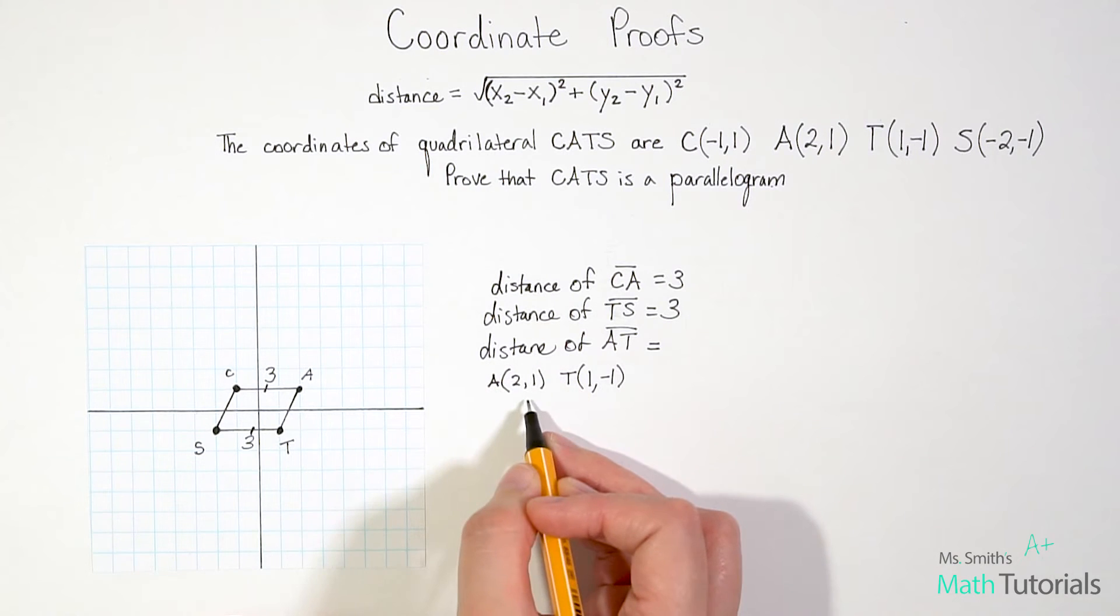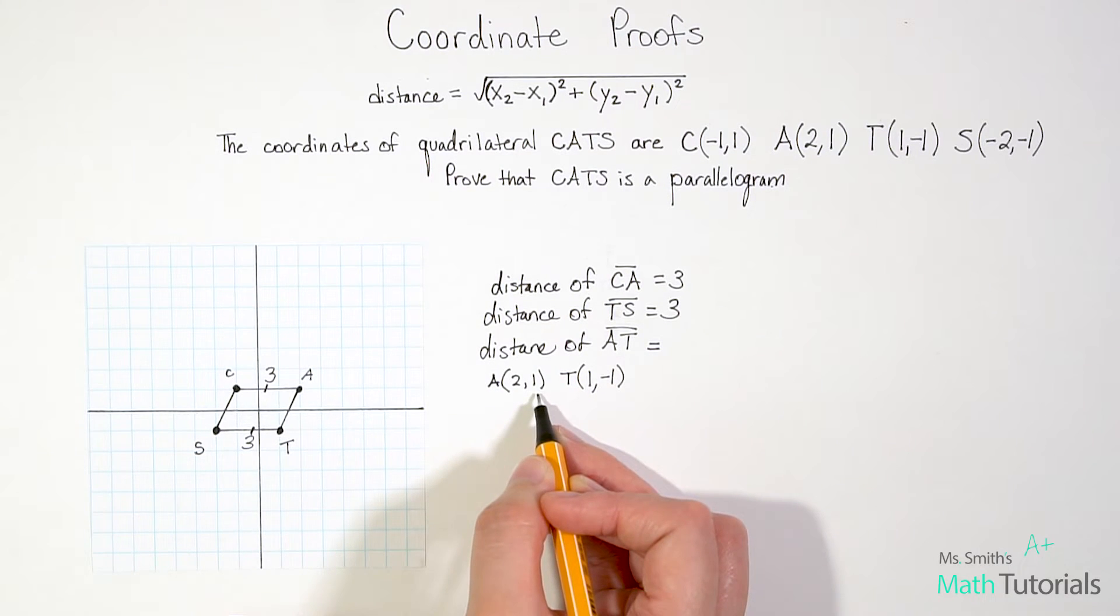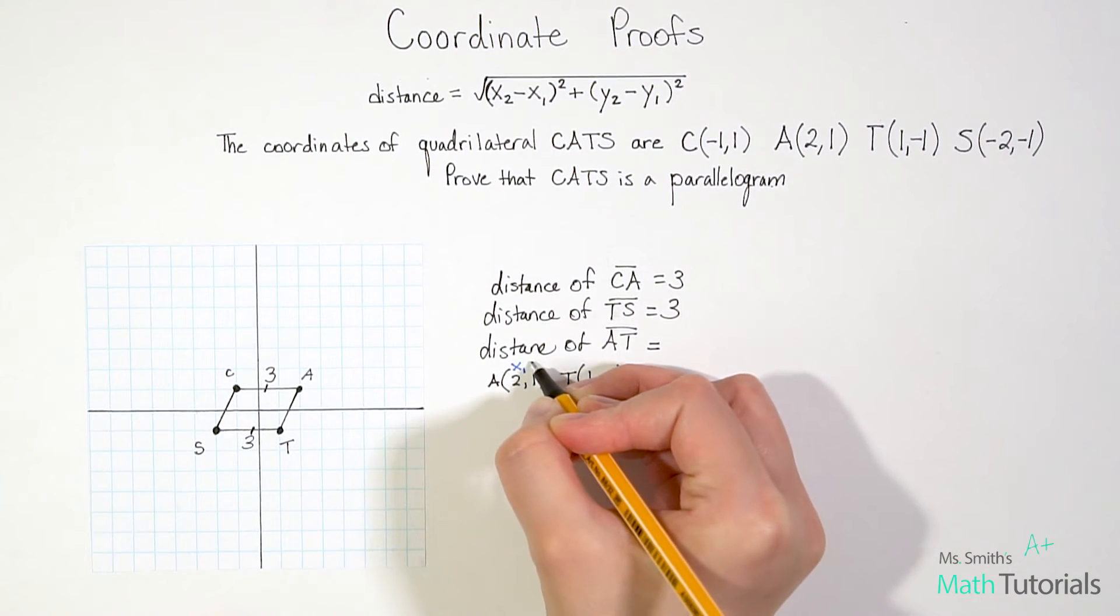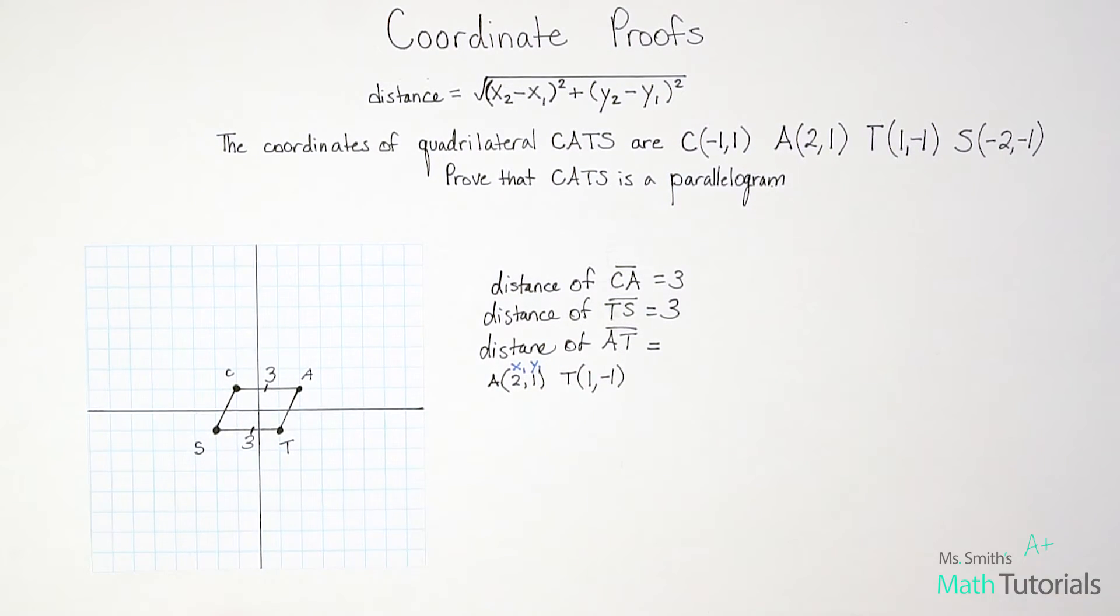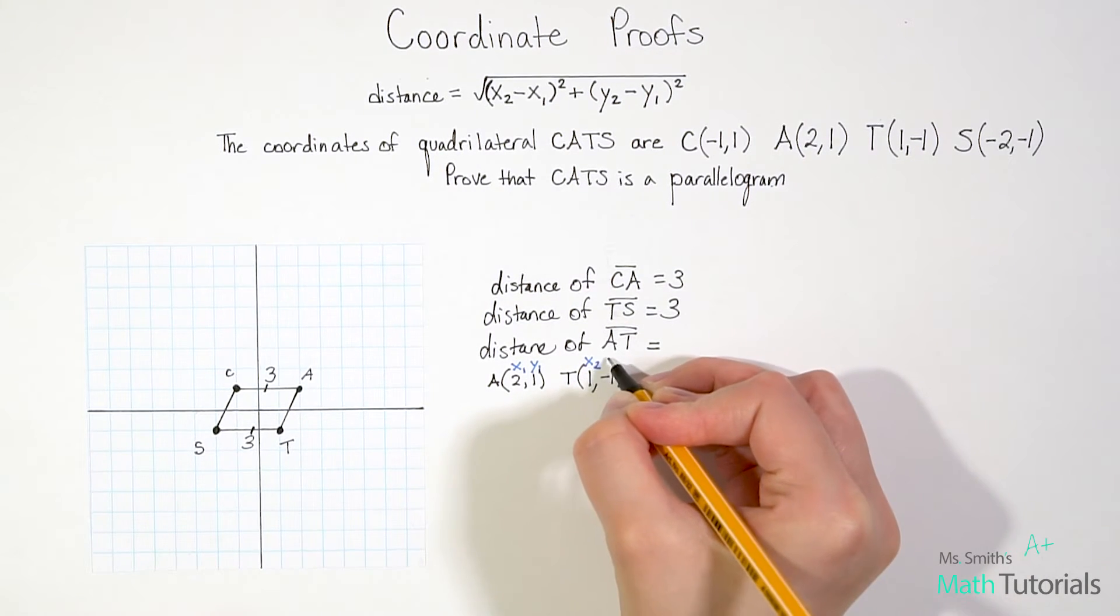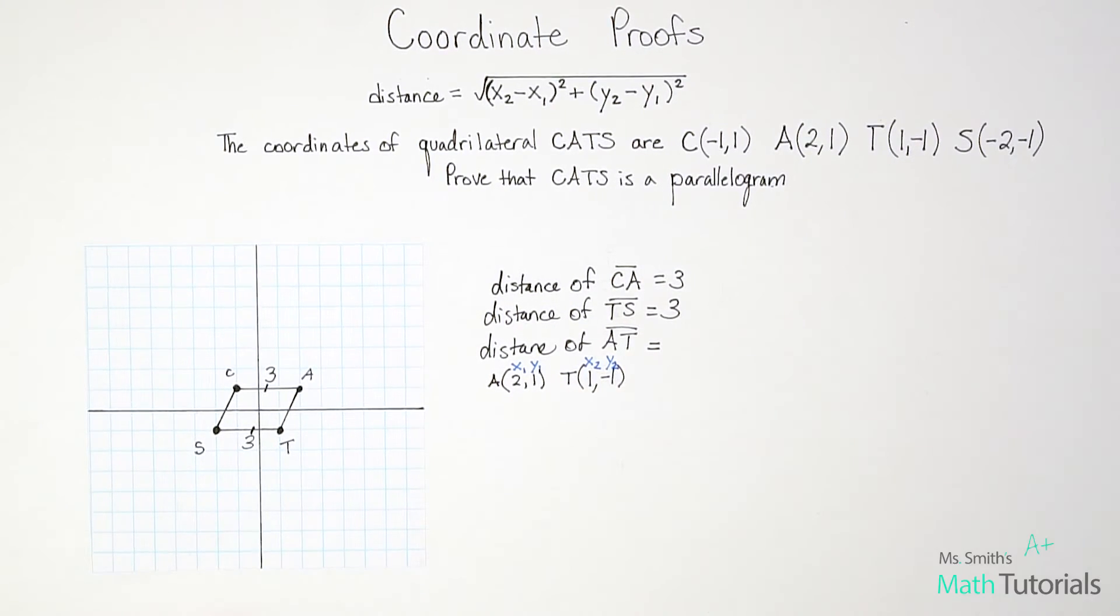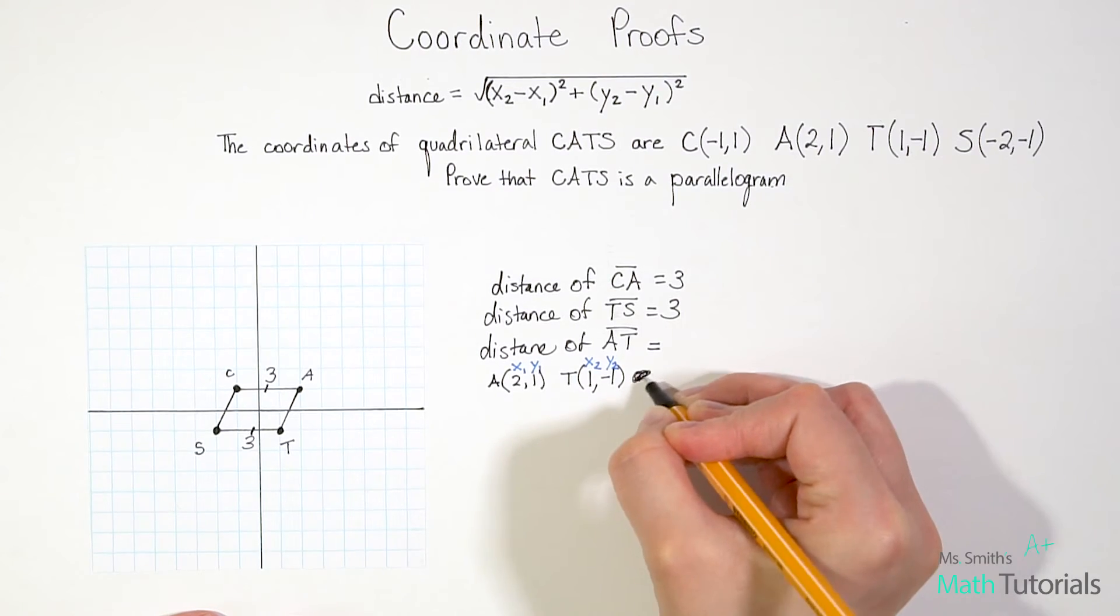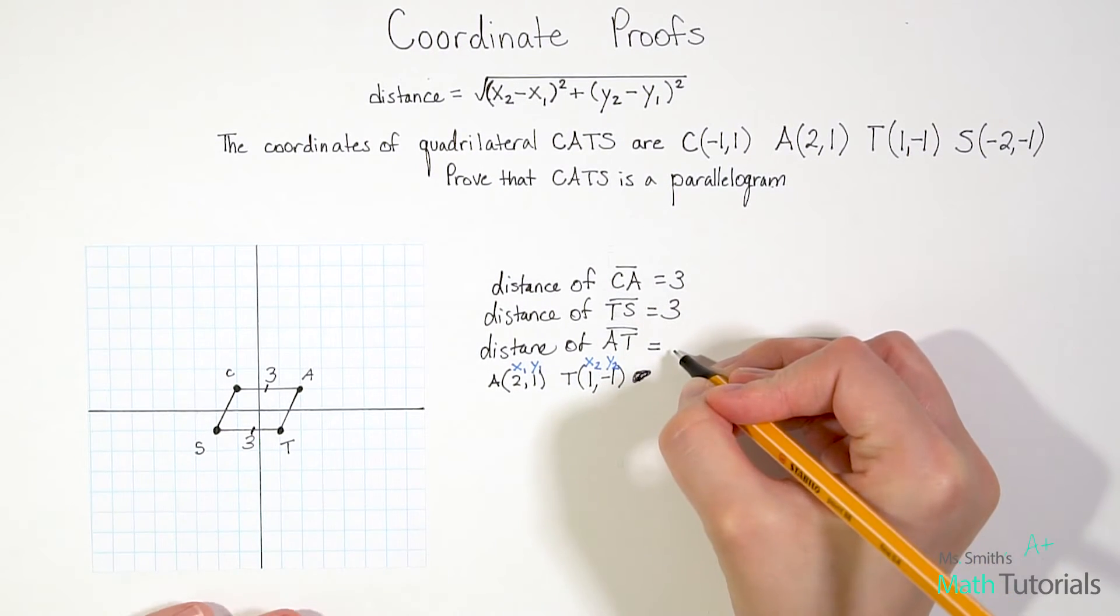I'm going to make point A my x1, y1. So I'm going to call my 2 my x1, and my 1 my y1. And I'm going to call for point T, I'm going to call that my x2, y2. So let's actually, now that I've got my x1, y1, x2, y2 together, let's go ahead and plug it into the formula.